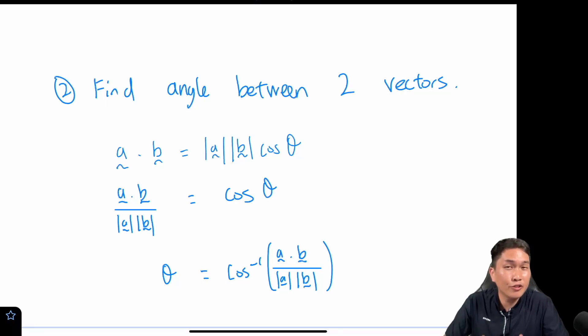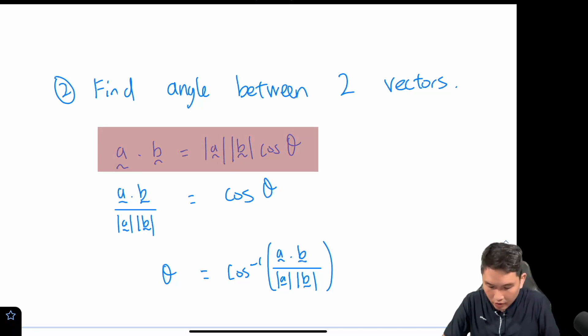The next thing I want to talk about today is that you can use the dot product to find the angle between two vectors, and you can actually work this out from the geometrical definition of the dot product.